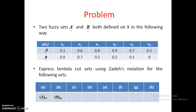Next, B of 0.4 — simply apply lambda = 0.4 to set B. Then A∪B of 0.7 — first find A∪B and then apply the 0.7 cut. After that, A∩B of 0.6 — find A∩B first and then apply the alpha cut of 0.6.